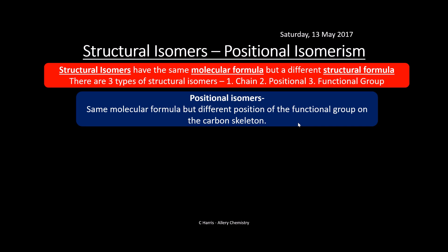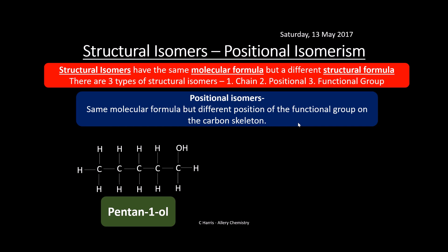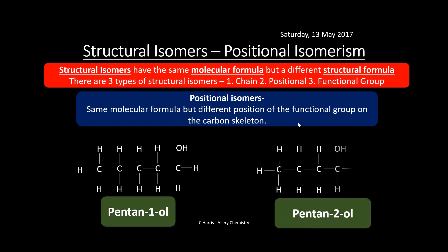Positional isomers have the same molecular formula but a different position of the functional group on the carbon skeleton. For example, pentan-1-ol has the alcohol group on the first carbon, and an isomer of that is pentan-2-ol, where the alcohol group is now on the second carbon. The position has changed — it's a positional isomer.